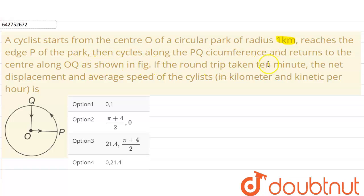If the round trip takes 10 minutes, the net displacement and average speed of the cyclist in kilometer and kilometer per hour is...